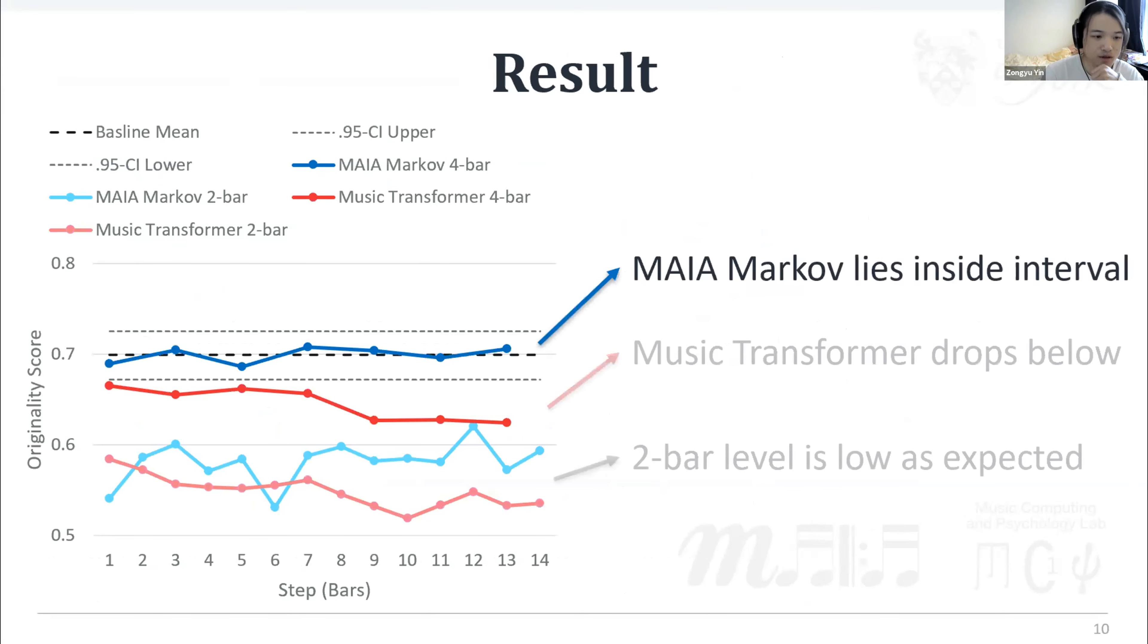As shown, MAIA Markov lies entirely inside the interval, whereas Music Transformer drops out of the interval. Below them, we use lighter color to denote the originality score obtained by two bar window size instead of four bar when calculating the cardinality scores. The originality scores here are low as expected because with smaller window size, it is easier to find the exact match in the target corpus.